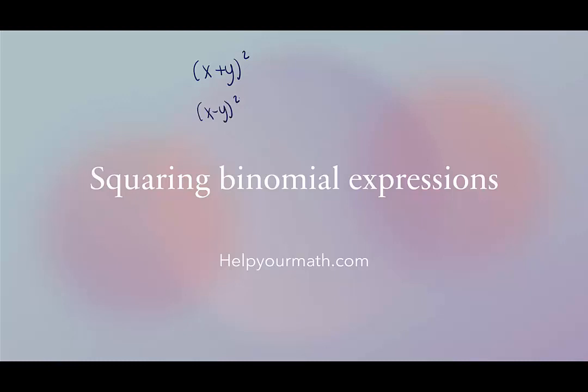So whether you choose to take the shortcut or not, it's up to you if you feel comfortable. Otherwise you're just going to rewrite this as x plus y times x plus y, and then you would FOIL and combine like terms. This one would be x minus y times x minus y. You would FOIL and combine like terms.